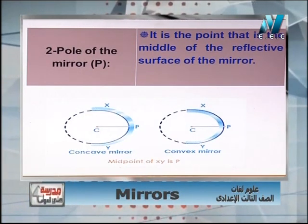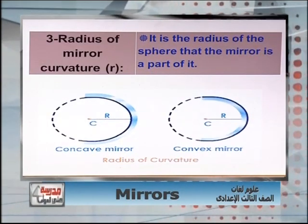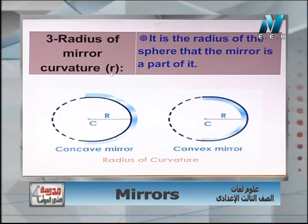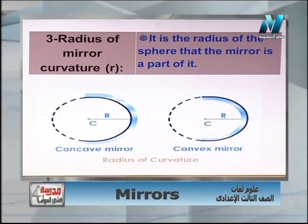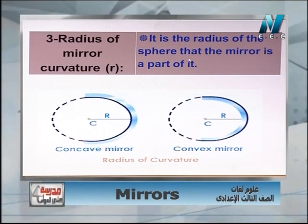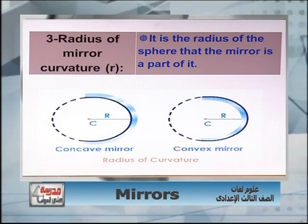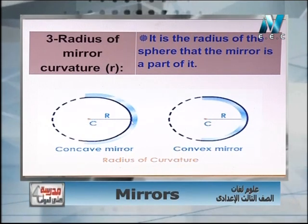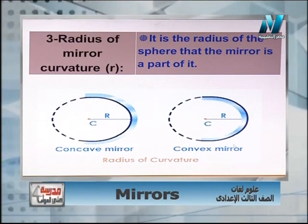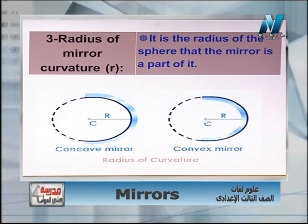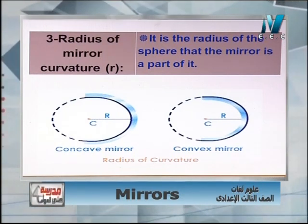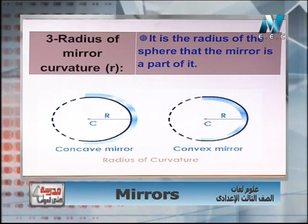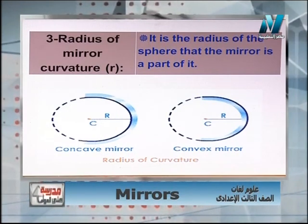Number three: the radius of curvature, symbol R. Just as you studied in geometry, the radius of curvature is the radius of the sphere of which the mirror is a part. As we see in the diagram, C is the center of the sphere, and the line joining C to the mirror surface is the radius R.